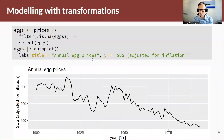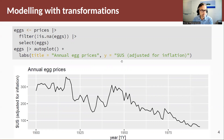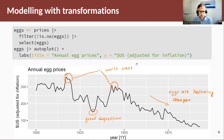Let's have a look at an example where a transformation is useful. This is a very interesting data set — annual egg prices in US constant dollars for a dozen eggs. There are a few interesting features on this plot. There are a couple of times where egg prices increase rapidly, due to world wars. There's the Great Depression over here, and then we see that in general, egg prices are becoming cheaper.